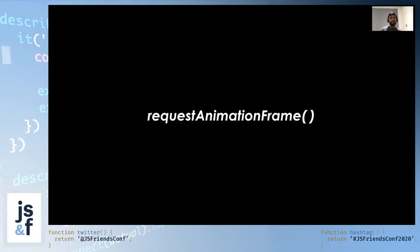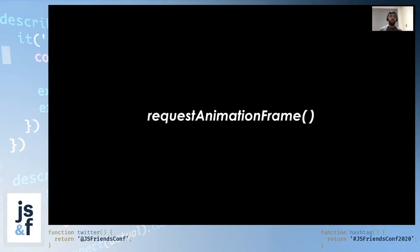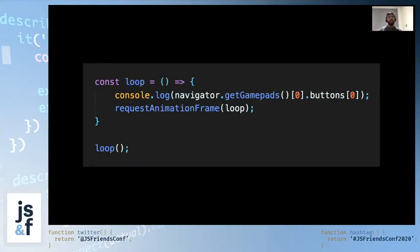So if setInterval is not the optimum way to poll for gamepad button and axis changes, what else can we do? requestAnimationFrame to the rescue. The callback provided to requestAnimationFrame is guaranteed to be executed at the start of the frame, meaning the specified callback will be called before the next repaint operation happens. The callback function is called around 60 times a second — 60 fps — but will match the screen's refresh rate.